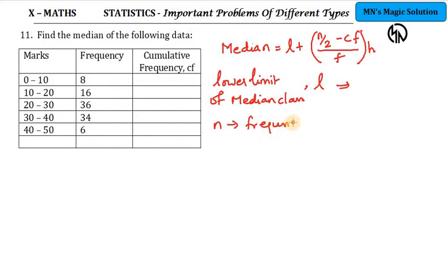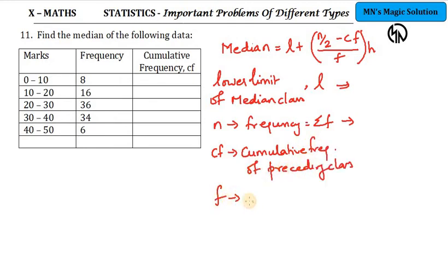So, frequency, you know, it is nothing but sigma F. So, N is calculate. Then, cumulative frequency is CF. CF is cumulative frequency of preceding class. And F is frequency of median class. So, now we have to identify which is the median class and which is the preceding class and all that.